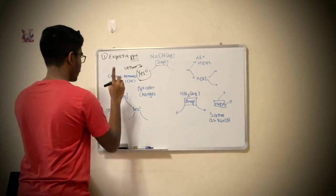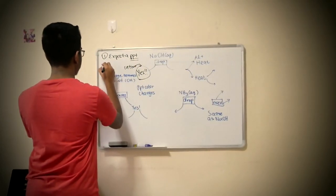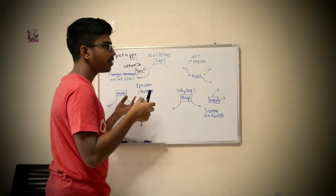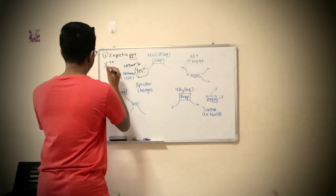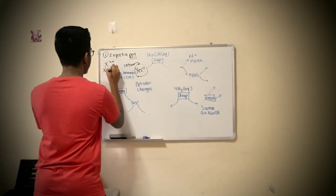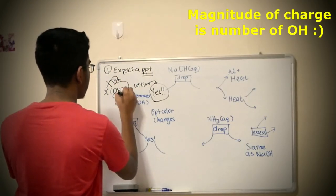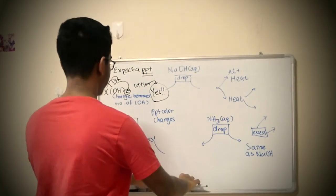Let me write it down for you guys. You have a 2 plus charge cation. That means that in the precipitate that's formed, it will form OH2. So the magnitude of the charge is transferred as the number of OH. Simple?